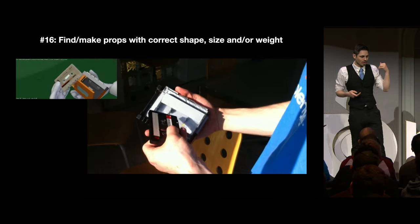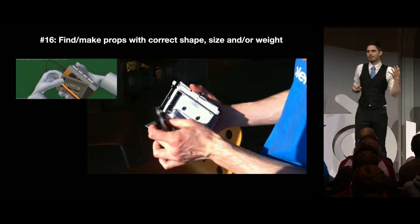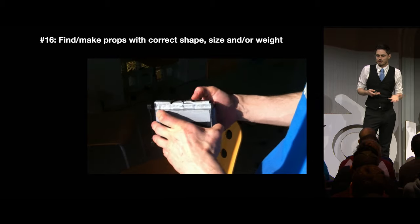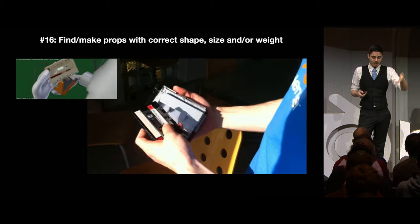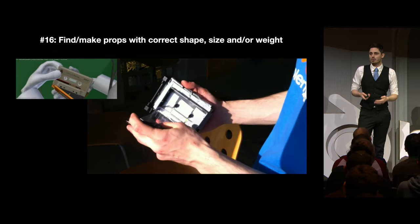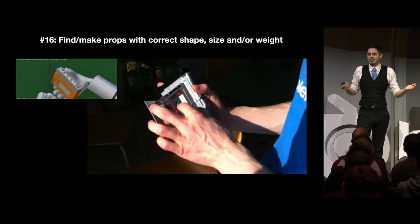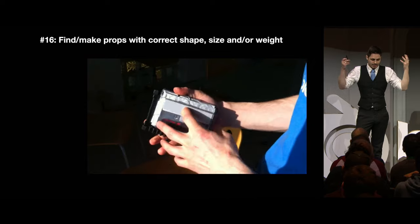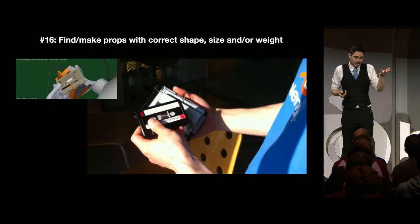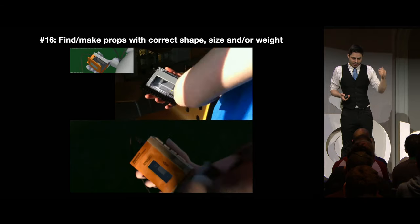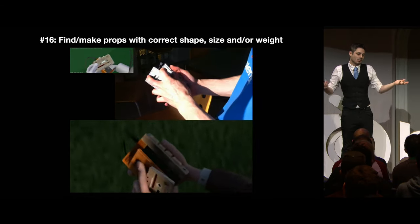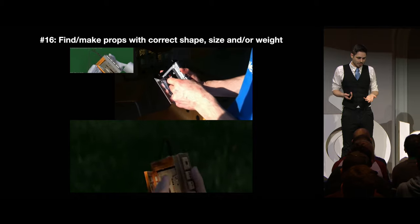You will almost never get a real prop that looks like what the character is using, so you have to be very creative. For Cosmos Laundromat, we needed a cassette player. We went to a couple of thrift stores, couldn't find anything — technology that doesn't exist apparently anymore. But I had a cassette and a holster, so I just taped it to an old hard drive. I got what I needed out of that performance.